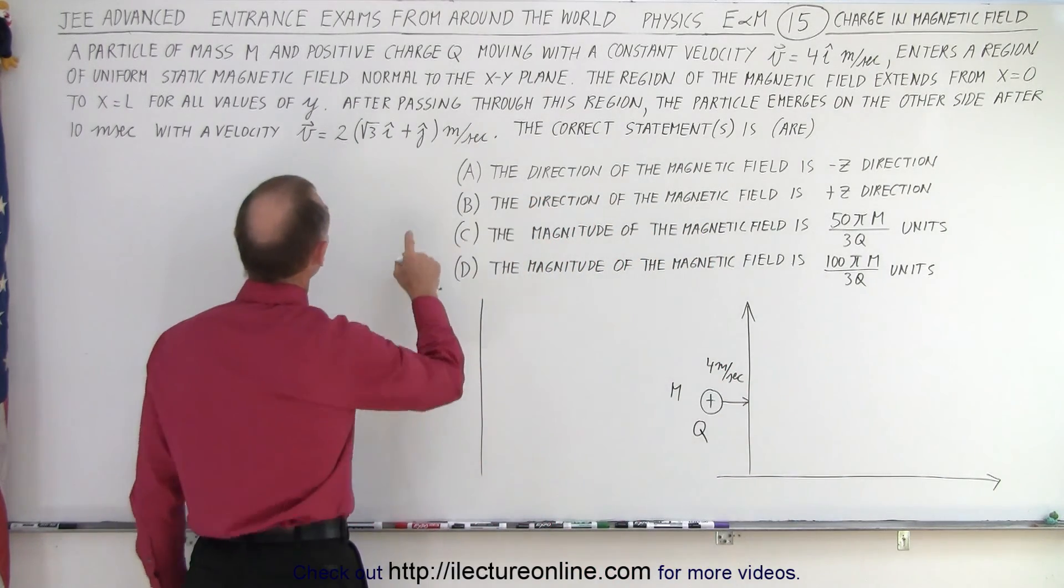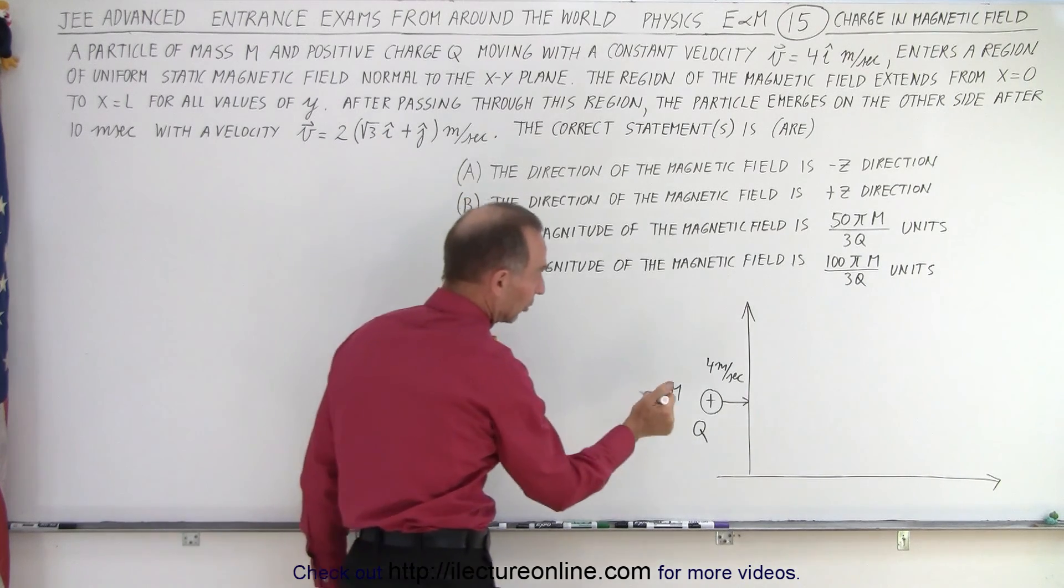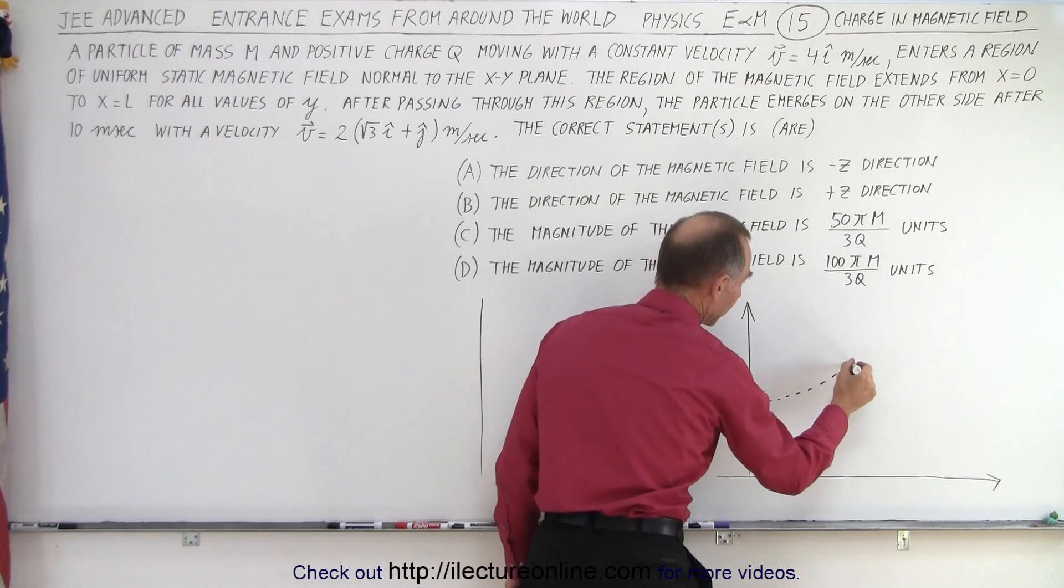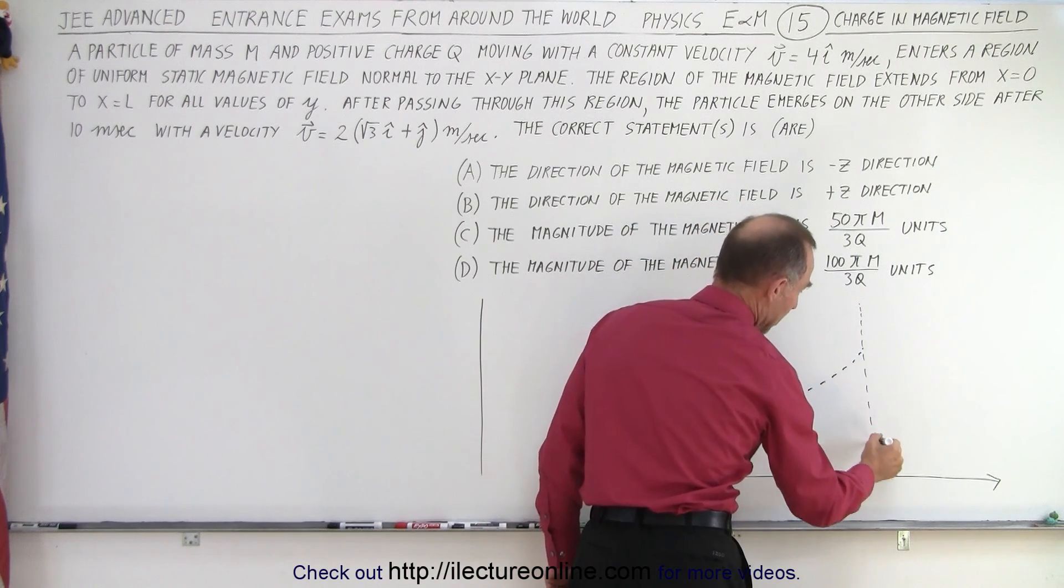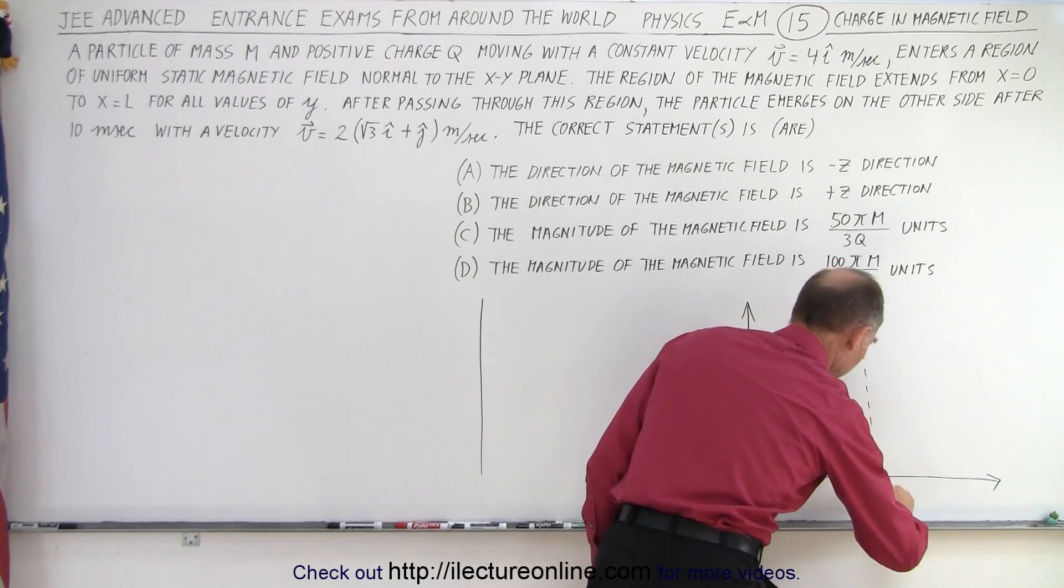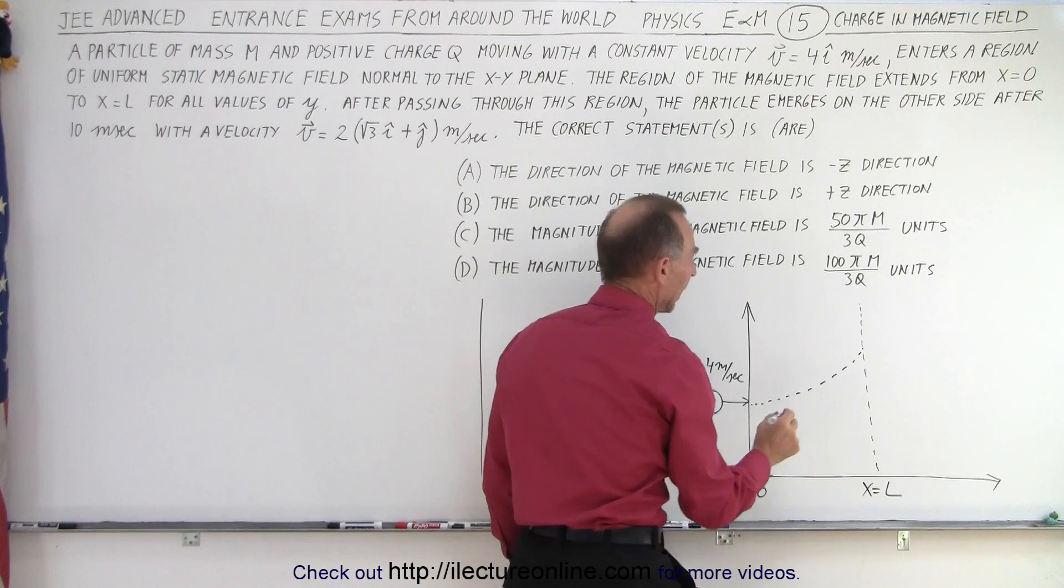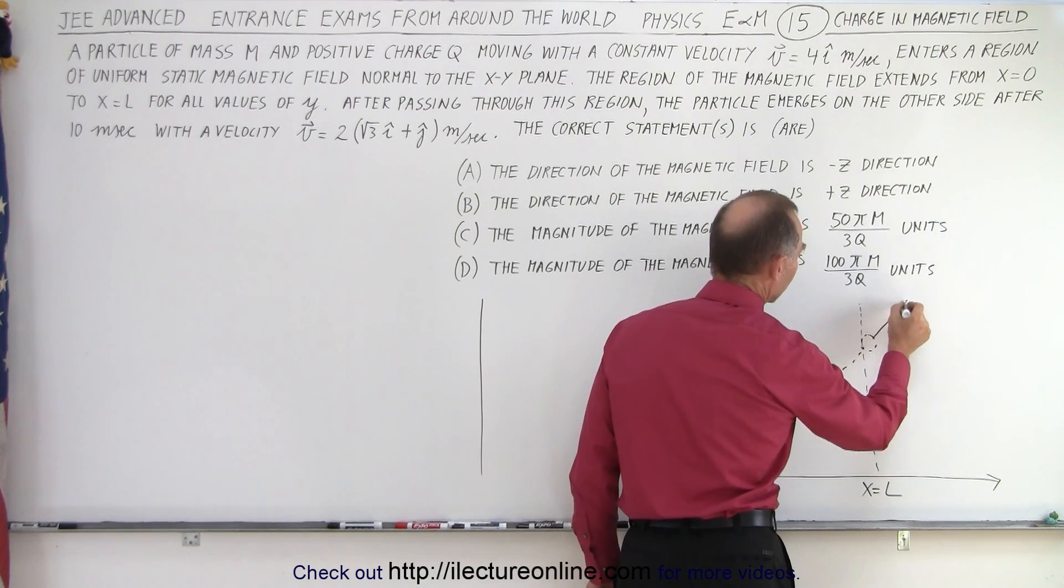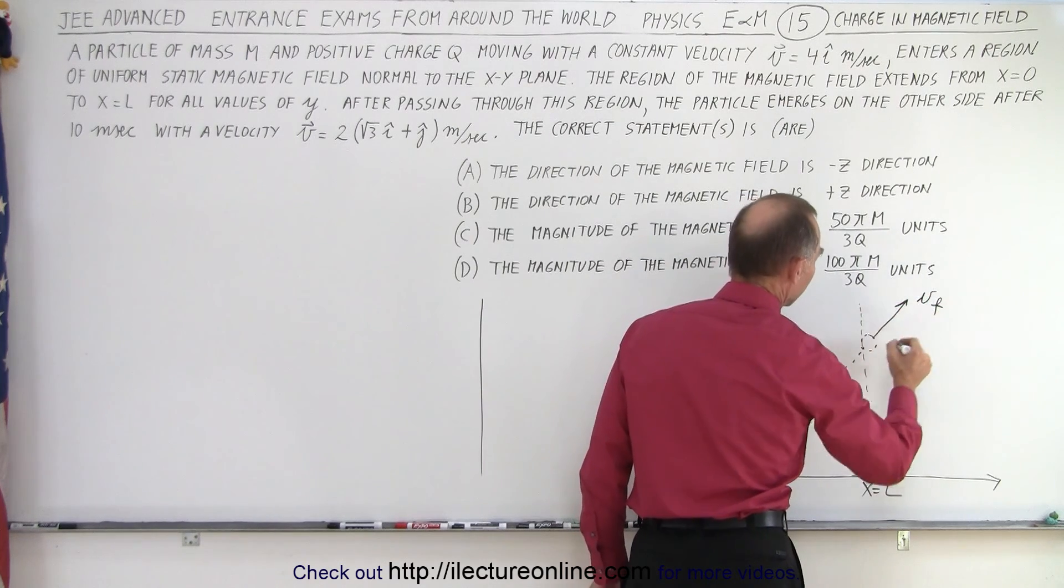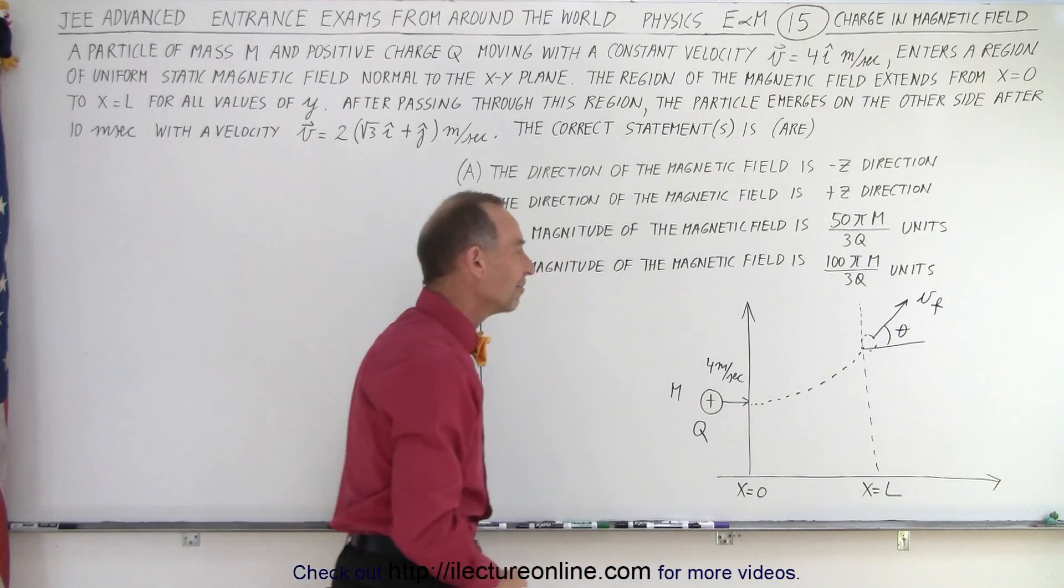When it emerges it will be moving in the positive x direction and the positive y direction, so it looks like it's going to curve like this. At some point it will emerge from the magnetic field, so this would be x equals L, this is x equals 0. The particle will be over here and it's going to move in some direction like this. This is v final and it's going to make an angle theta with v final.